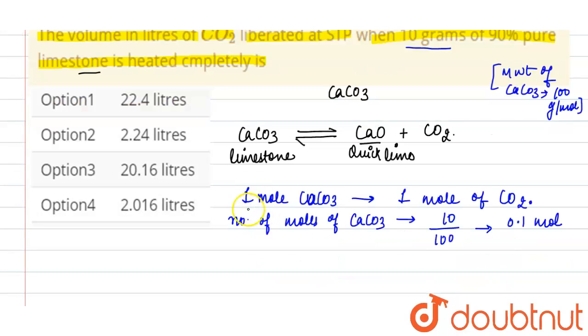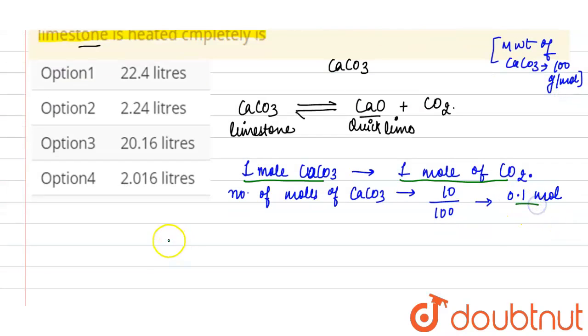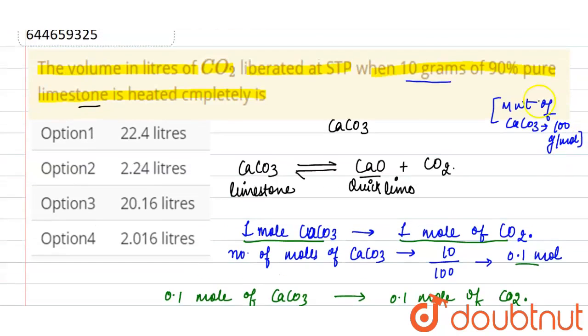As in this reaction, one mole of calcium carbonate will give one mole of carbon dioxide. So 0.1 mole of calcium carbonate will give 0.1 mole of carbon dioxide.